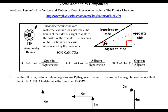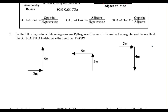SOHCAHTOA: sine is equal to opposite side divided by hypotenuse — that's a ratio. Cosine theta is adjacent divided by hypotenuse. Since the hypotenuse is the larger side, both of those ratios can be no more than one; they vary between positive and negative one. Tangent is the opposite side over the adjacent side, and it can be more than one.